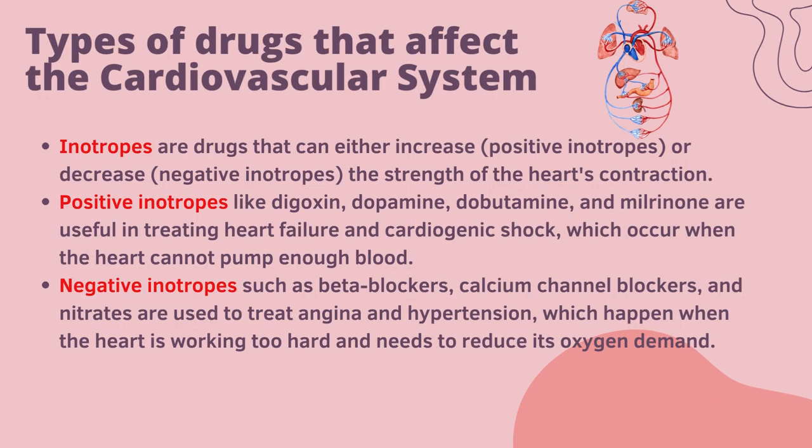Types of drugs that affect the cardiovascular system: Inotropes are drugs that can either increase (positive inotropes) or decrease (negative inotropes) the strength of heart contraction. Positive inotropes like digoxin, dopamine and amiodarone are useful in treating heart failure and cardiogenic shock. Negative inotropes such as beta blockers, calcium channel blockers and nitrates are used to treat angina and hypertension.